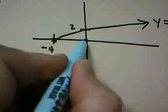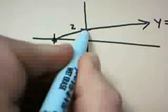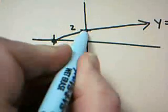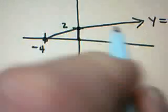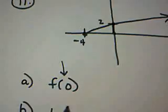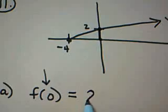Well, obviously, here you would have to walk up, and when you walk up, where do you hit? What y value do you come to? You come to the y value 2. Therefore, f of 0 is equal to 2.